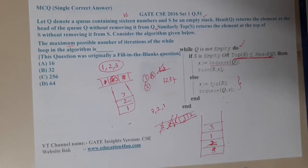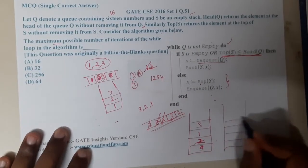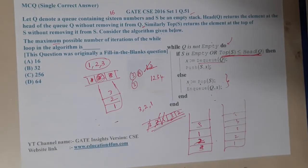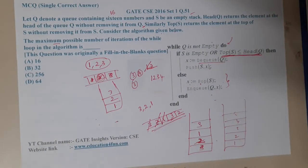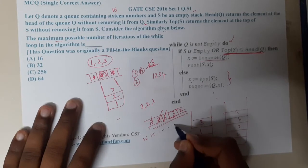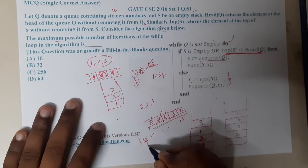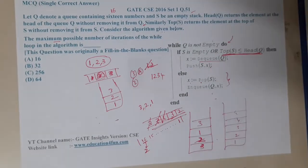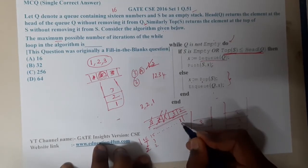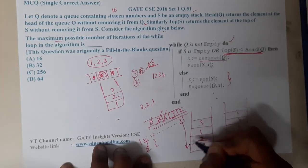Now the key insight: regardless of the input order, the algorithm sorts elements into ascending order — one, two, three, four, five, six, and so on. So if you give 16 elements in descending order (16, 15, 14, ... 1), it will repeatedly push and pop each element, continuing until the smallest reaches its correct position.